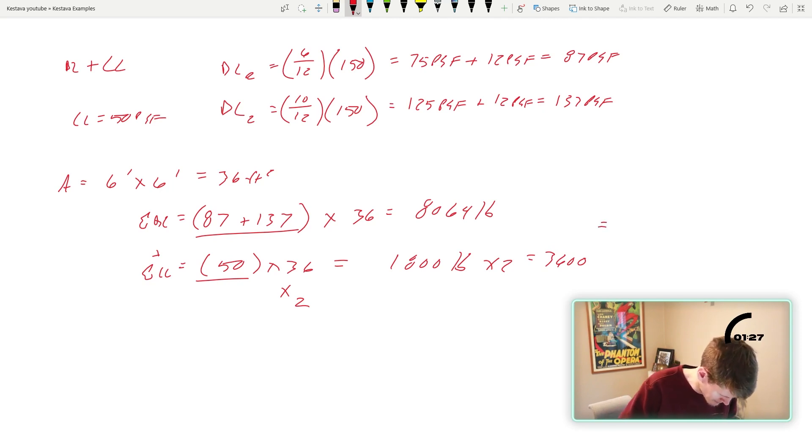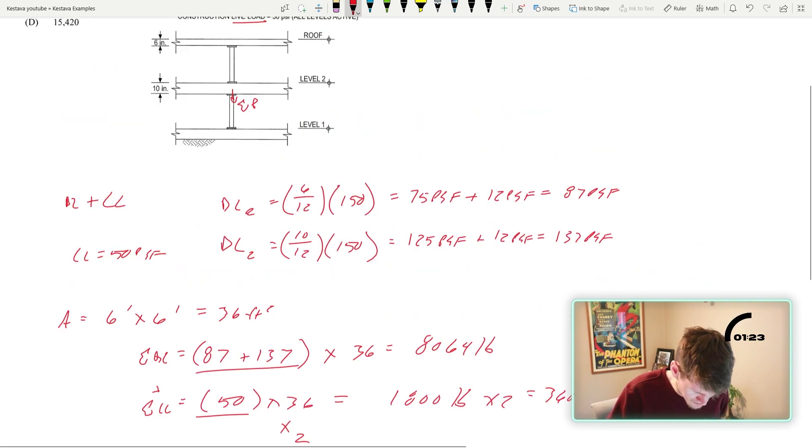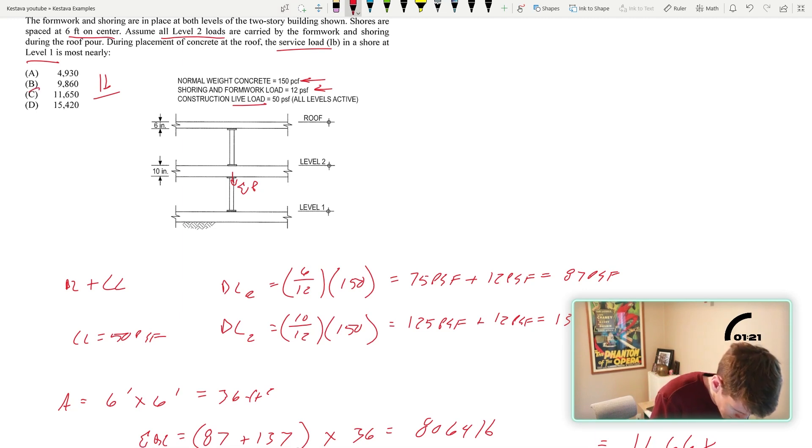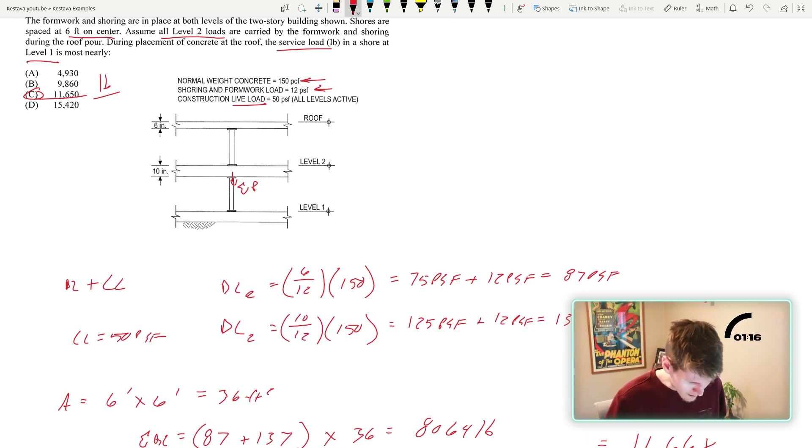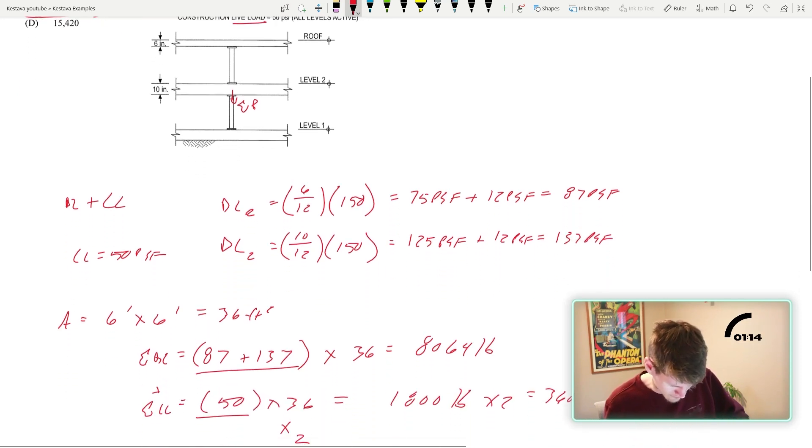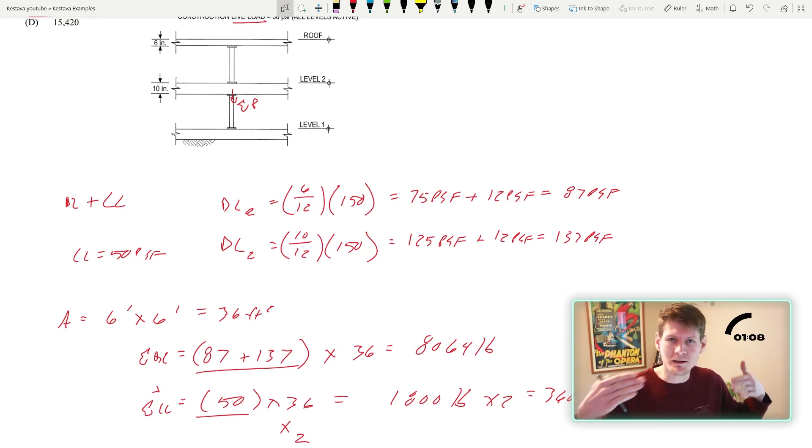That plus that is 11.66 kips. I'm going to go up. I'm going to say C. What's the time? Oh, we got a minute 20. Let's go. But did I do it right? So I got to go check that now and C. So I'm going to cut here. I'm going to go check the answer and then we're going to talk about it quick.